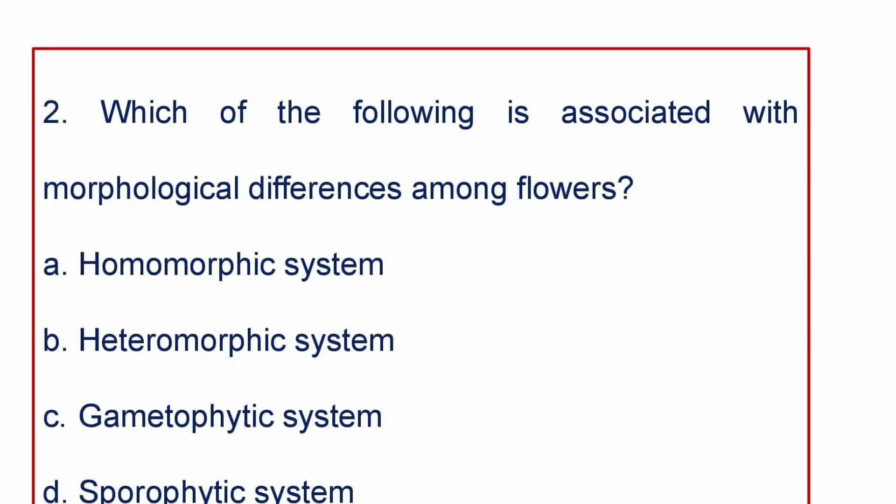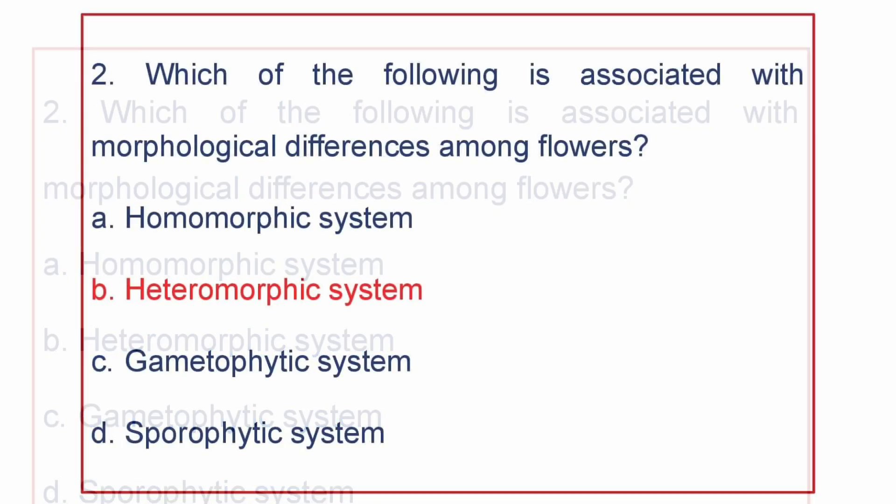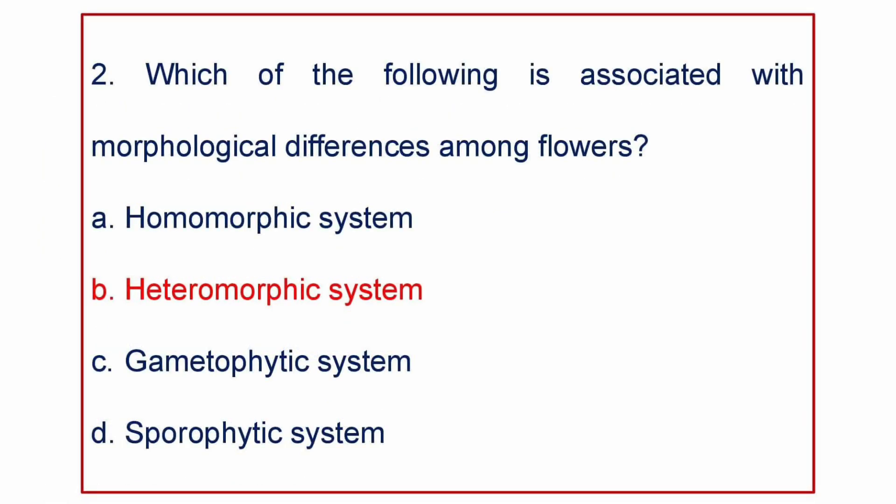Next question. Which of the following is associated with morphological differences among flowers? A. Homomorphic system, B. Heteromorphic system, C. Gametophytic system, or D. Sporophytic system. Heteromorphic system is usually associated with morphological differences among flowers.